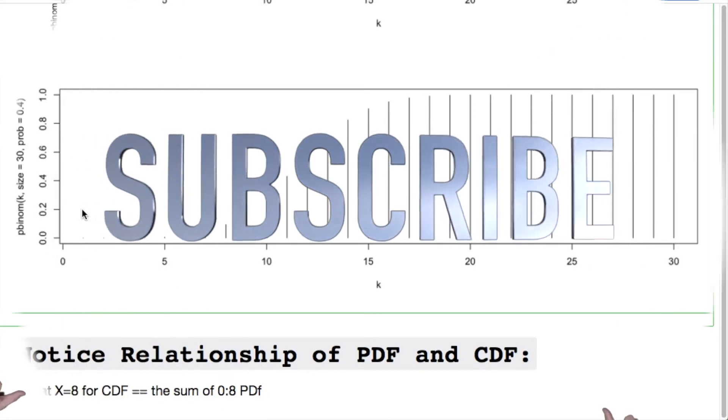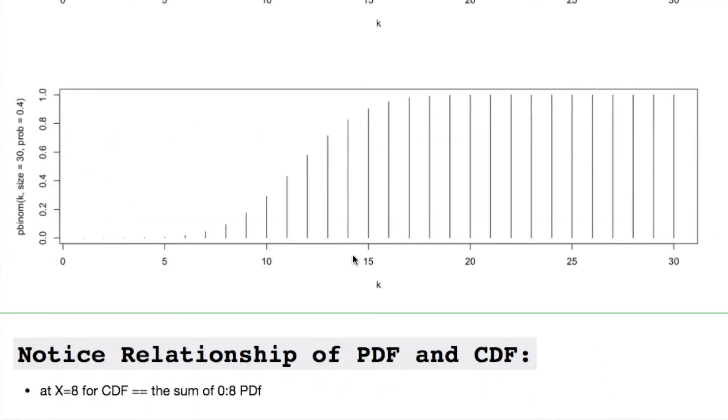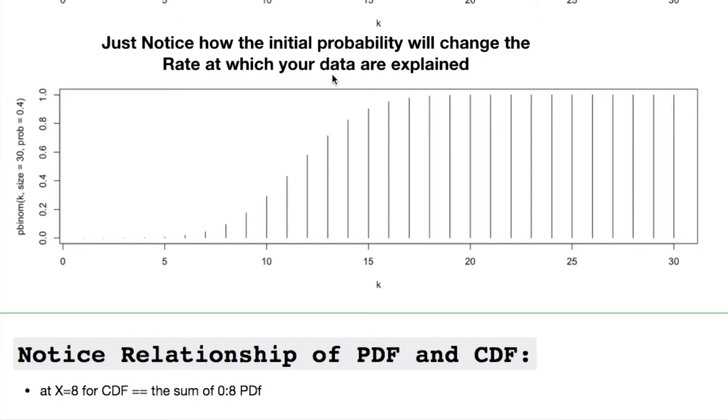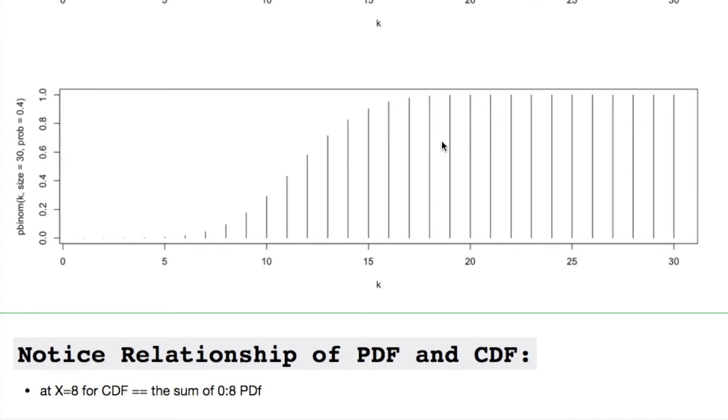Then we'll look at the same thing but with a probability of 40. You'll notice that it's going up to about 17 would encompass 100 percent of our data and then everything else is just really irrelevant.